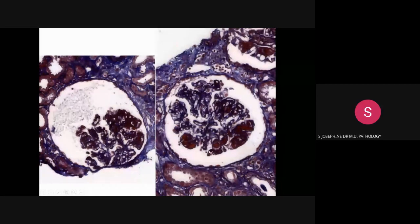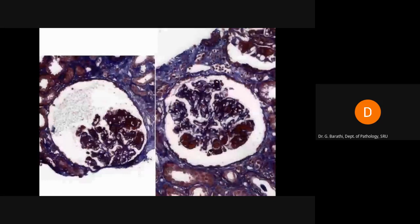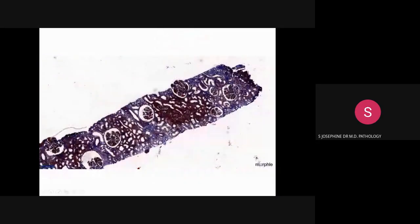This is the whole mount view of the Masson's trichrome, showing a slight increase in interstitial fibrosis — we have graded interstitial fibrosis at 10%. A correction was noted during the presentation: the term 'hyaline thrombi' should be used rather than 'fibrin thrombi' per current nomenclature.